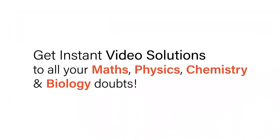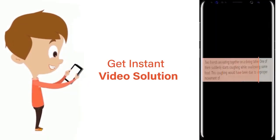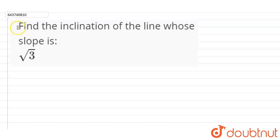With DoubtNet, get instant video solutions to all your maths, physics, chemistry, and biology doubts. Just click the image of the question, crop the question, and get instant video solution. Download DoubtNet app today. Our question is find the inclination of the line whose slope is √3.